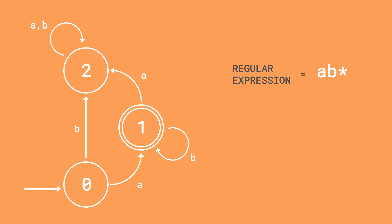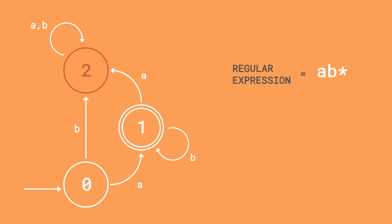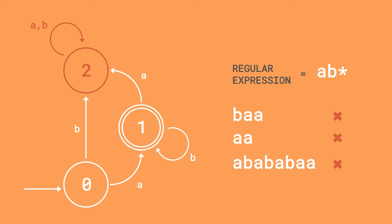However, if you then input an 'a' from one, or you started off from zero with a 'b', then you have a problem, because the machine transitions to two instead. No arrows go from two to one, so you're stuck there — essentially in an unaccepting state. You just keep inputting 'a's or 'b's from two without a change of state. It means our string doesn't match the regular expression. Although this example may seem abstract, using these diagrams for regular expressions is actually a really important tool for computer scientists.